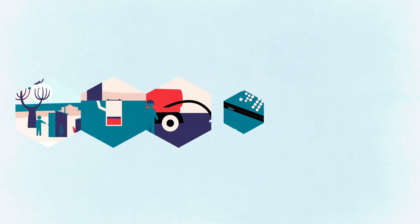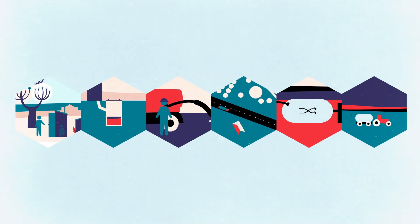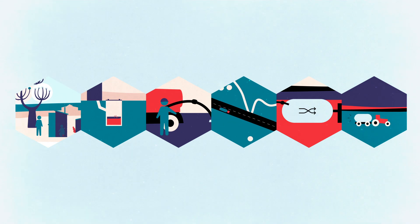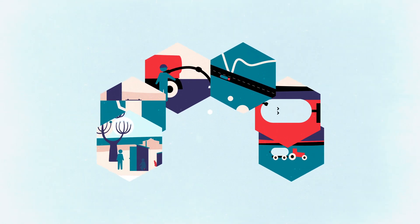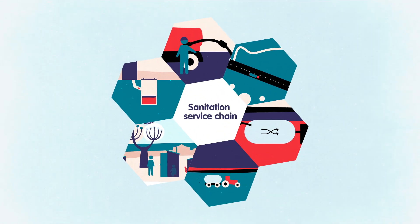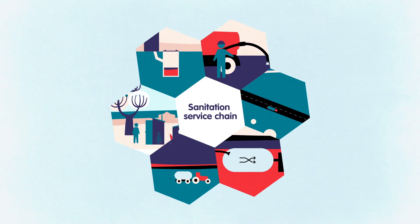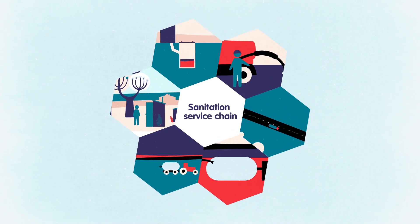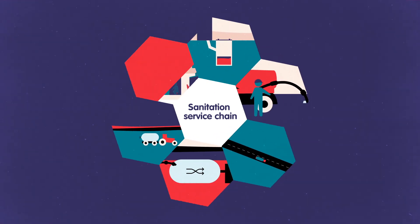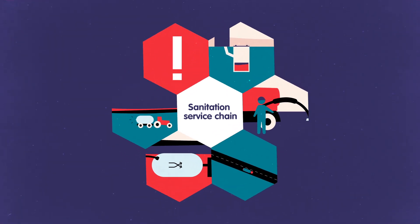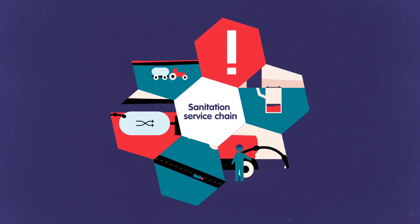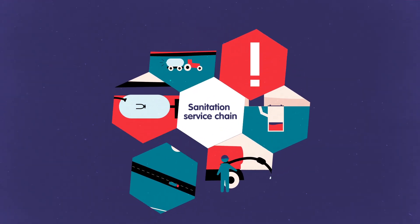Together, each of these steps ensure the proper management of faecal waste and are collectively known as the sanitation service chain. As a chain, a weakness in one link has implications on the performance of the entire sanitation service.